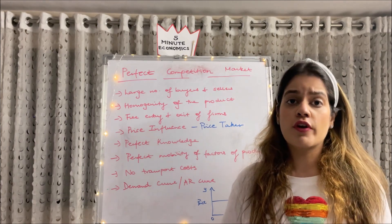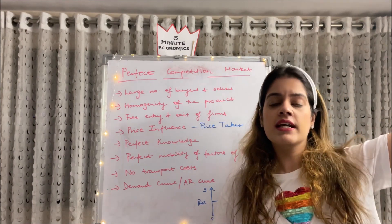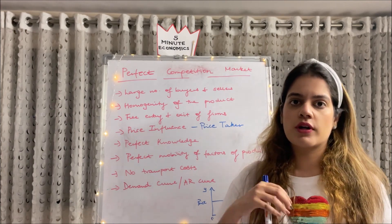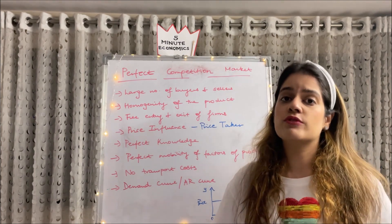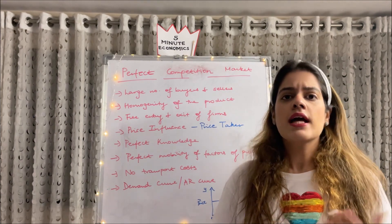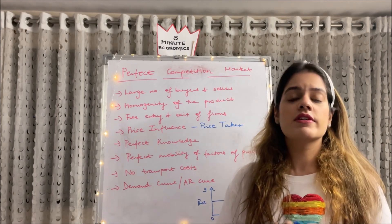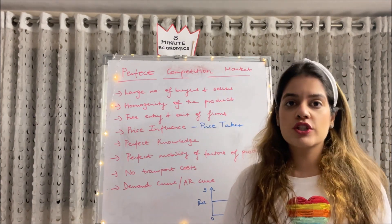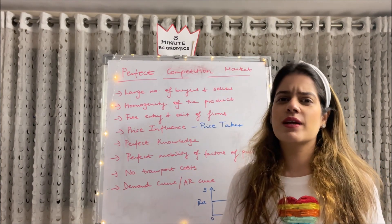Next, no transport cost — this is a very important assumption in a perfectly competitive market. For example, if I produce a product in Maharashtra and sell it in a northeastern state, I would incur transport cost, which would cause the price to vary. So we assume no transport cost, because if it were included the price would differ across regions, which would violate the homogeneity assumption — same quality at the same price throughout the market. There is also no advertisement cost in this market, because everyone is selling the same thing, so there's no need to advertise.